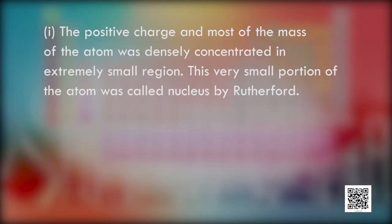Third, calculations by Rutherford showed that the volume occupied by the nucleus is negligibly small compared to the total volume of the atom. The radius of the atom is about 10⁻¹⁰ meters, while that of the nucleus is about 10⁻¹⁵ meters. To appreciate this difference: if a cricket ball represents the nucleus, the radius of the atom would be about 5 kilometers. On the basis of these observations and conclusions, Rutherford proposed the nuclear model of atom, in which the positive charge and most of the mass are densely concentrated in an extremely small region called the nucleus.